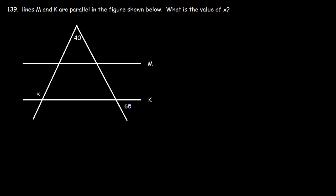Number 139: Lines M and K are parallel in the figure shown below. What is the value of x? You need to be familiar with vertical angles, corresponding angles, and alternate interior angles. Two angles shown are vertical angles, so they're congruent. Because the two lines are parallel, two other angles are corresponding angles and also congruent — so that angle is 65°.